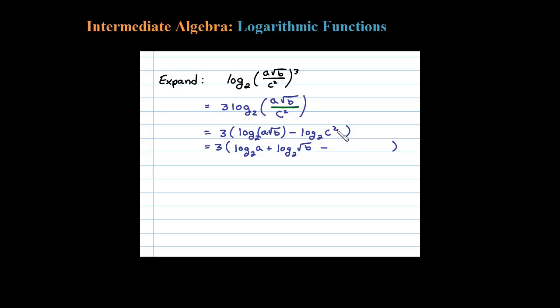We have another exponent, so let's bring that down as a coefficient: 2 times log base 2 of c. Now we have to worry about the square root of b. There's no explicit property for square root.